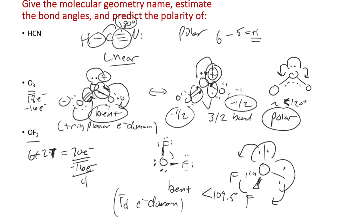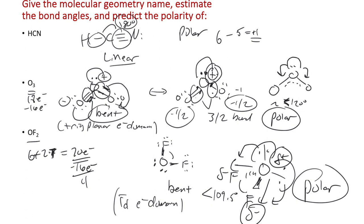For polarity of OF2: fluorine is more electronegative and picks up the negative charge, while oxygen picks up a positive charge. There's no atom with the same negative charge on the opposite end of the molecule, so OF2 is polar. Think about the charges that end up on the atoms — electrons are very small and act as waves, so it's the atoms carrying the charge that matters. Think about where the charges lie relative to the nuclei.